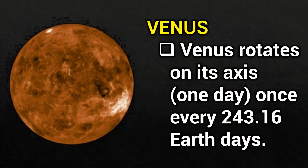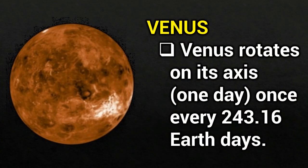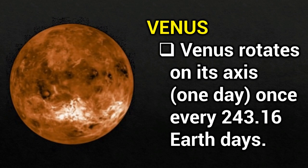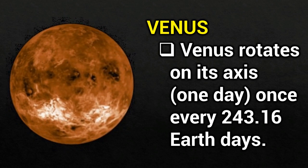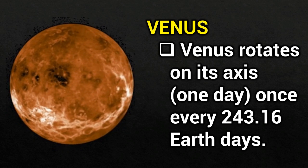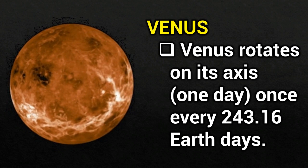Venus. Venus rotates on its axis once every 243.16 Earth days.